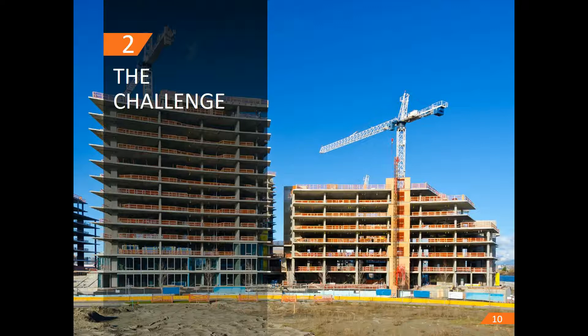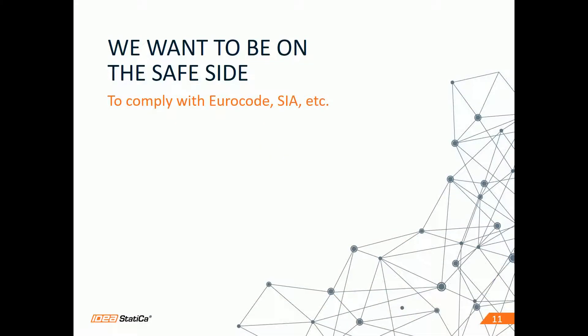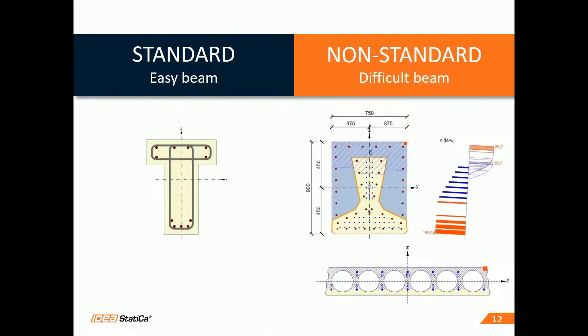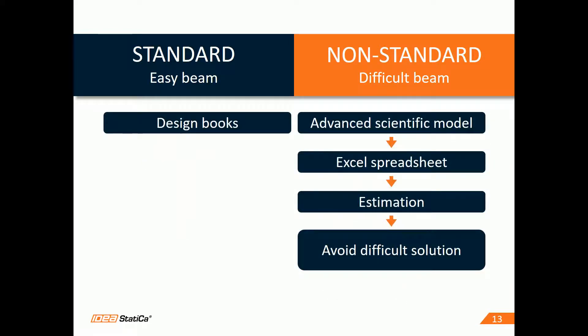Technology should make our lives easier. First of all, we want to be on the safe side. In today's constructions, it means complying with Eurocode and other standards. In our concrete projects there are standard, easy members and non-standard, difficult ones. We deal with them differently. There are design guides and formulas for the standard ones. For complicated members we need to put together advanced models in 3D programs, then use Excel spreadsheets to get approximate code checks and estimate a lot of variables on the way. Sometimes it's just easier to avoid such difficult design.